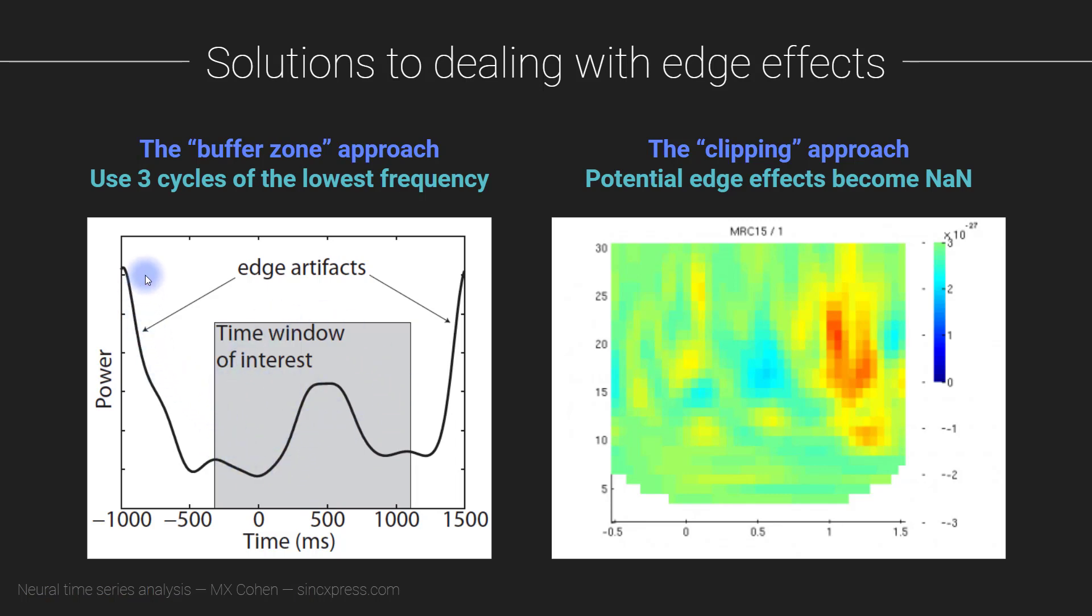So how much time do you need for the buffer zone? Well, it's hard to compute exactly because the size of the edge effect depends on the data, not necessarily on the time window. That said, a recommendation that I typically give is to set the buffer zone to be three cycles at the lowest frequency that you are extracting out of the data.